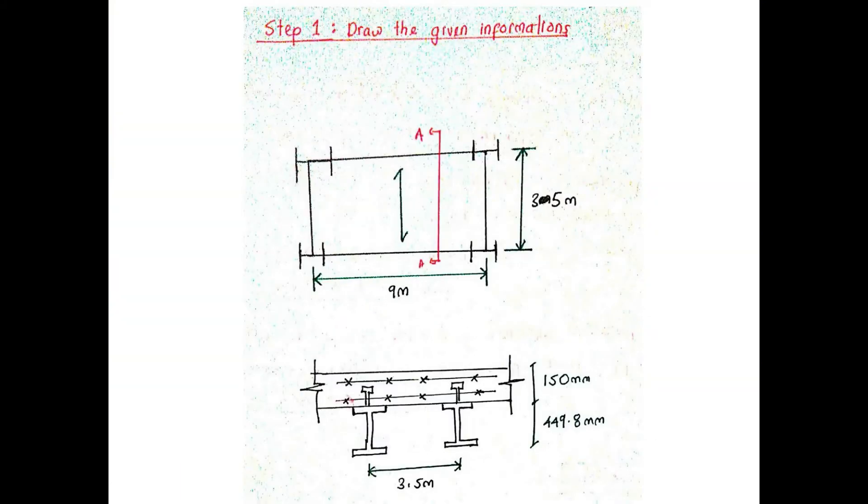Okay class. Now let's sketch based on the given info. The top figure is the plan view of the composite beam, while the bottom figure shows the cross-section view of the composite beam section.